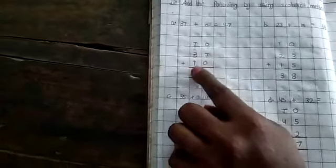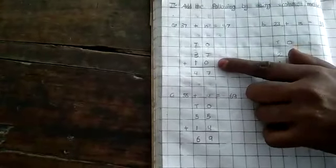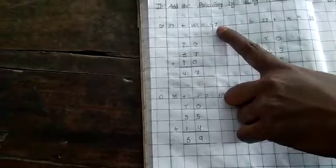37 plus 10. So how we are going to do? 7 plus 0 is 7. In 10th place, 3 plus 1 is 4. 47. You have to write this. 47 here.